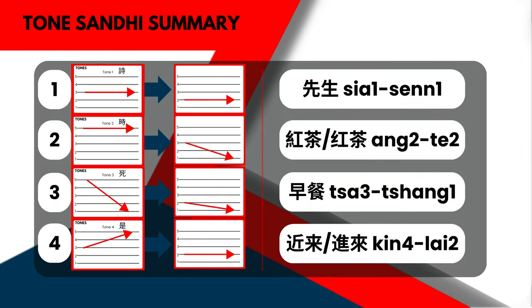善詞, meaning Sir or Mr. The first character is spoken as 善詞 on its own, however it changes when it is not the last syllable: 善詞 — notice that the second syllable is higher.